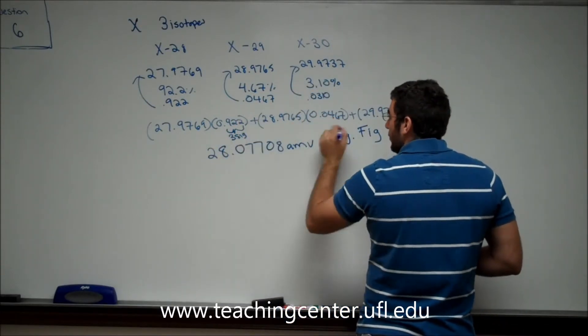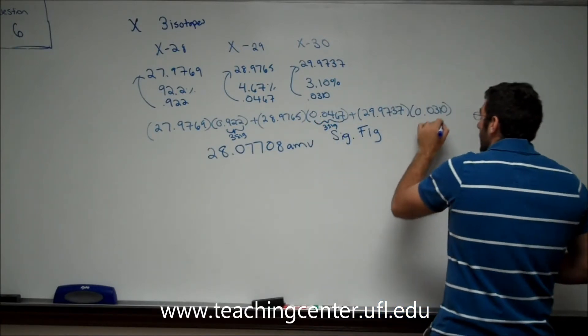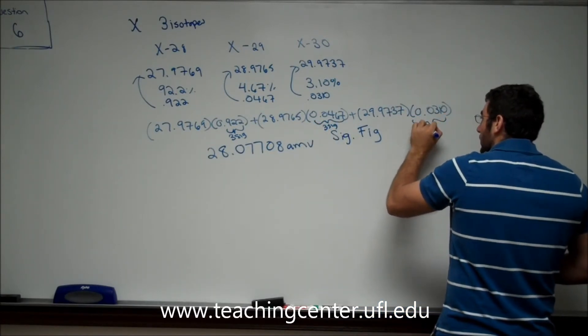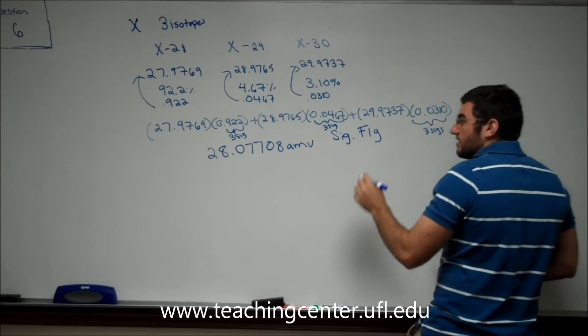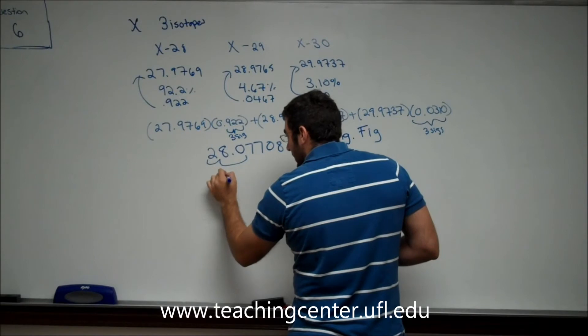9, 2, 2, 4, 6, 7. So that means our answer can only have 3 sig figs also.